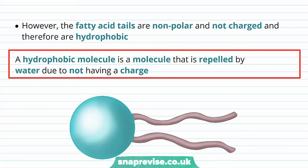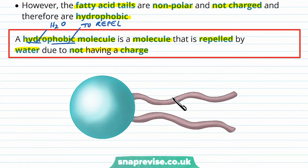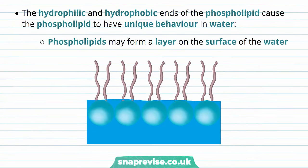The other part of the molecule is slightly different. The fatty acid tails attached to the glycerol are not polar and not charged — they don't have any ions or polarity. So we call them hydrophobic. A hydrophobic molecule is repelled by water due to having no charge or polarity — hydro meaning water, phobic meaning to repel. These fatty acid tails have no charge and no polarity, so a water molecule brought towards them would simply bounce off. The phospholipid therefore has a hydrophilic end and a hydrophobic end.